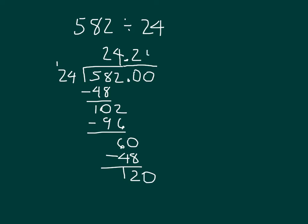120 there. The answer is 5. 5 times 24 is going to give me 120. And 120 minus 120 is 0. So my answer is 24.25.